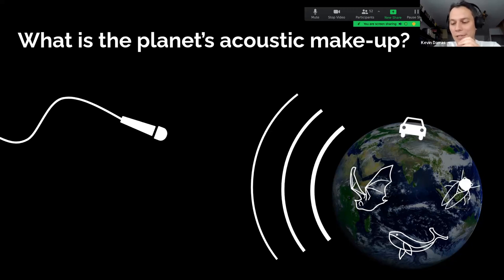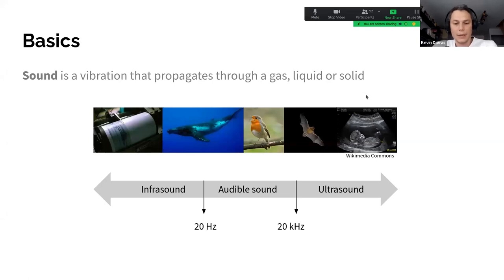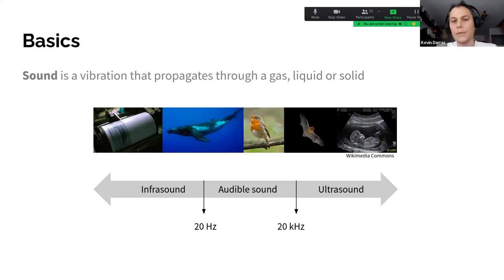I don't need to introduce too much, because I'm assuming I'm preaching to the choir. We all know that we're using acoustic methods to monitor environmental phenomena — mostly biodiversity, but also human impacts on the environment. Regarding basics, what unites us? Sound is just a vibration that propagates through a medium — it might be gas, it might be a solid. This is what we take advantage of to monitor all kinds of phenomena.